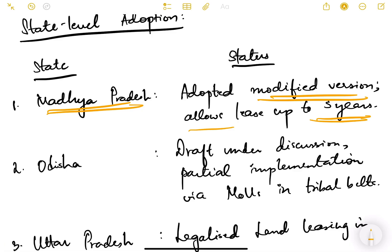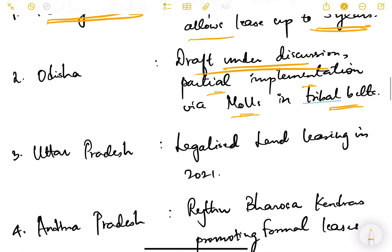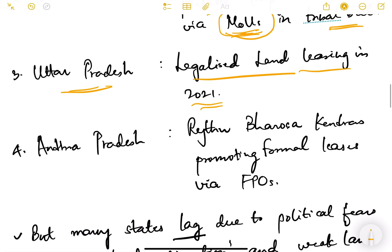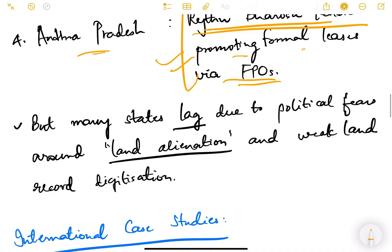In Odisha, the draft is under discussion with partial implementation via MOUs — Memorandum of Understandings — in tribal belts. Uttar Pradesh legalized land leasing in 2021. Andhra Pradesh under the Raitu Bharosa Kendras promotes formal leases via Farmer Producer Organizations.